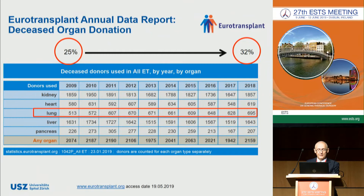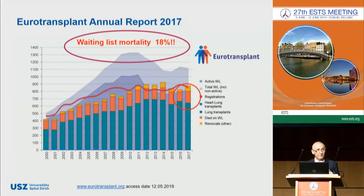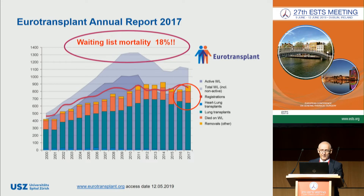Looking at the latest Eurotransplant annual data report, over the last nine-year period the use of lungs from deceased donors increased from 25% to 32%. However, this increase in donor lung utility did not solve the problem in Eurotransplant countries. The graph shows the mismatch between the waiting list and the number of transplants performed, and the number of patients who died while waiting for a suitable organ. The waiting list mortality in the Eurotransplant report was 18%.